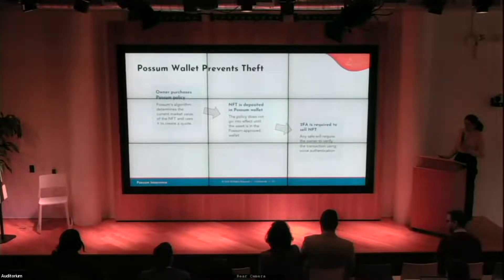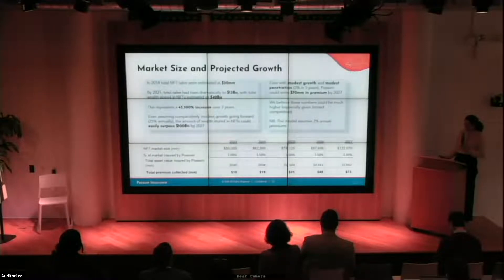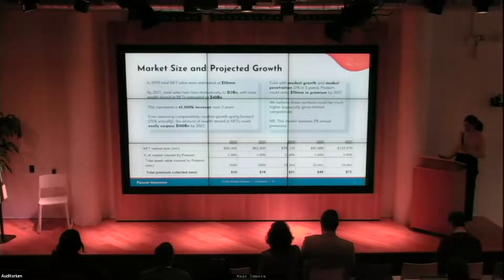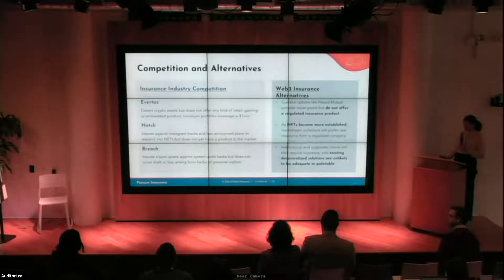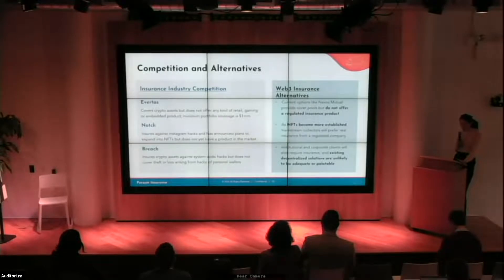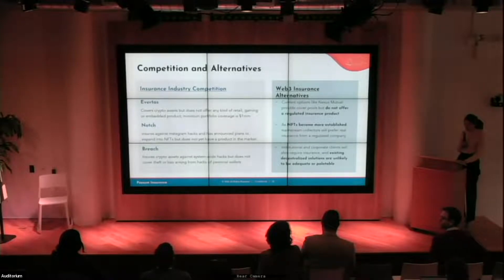The policy does not go into effect until the asset is deposited in a special Possum-approved, multi-signature wallet. We are making conservative assumptions about growth because it's not possible to rely on past trends showing virtually exponential growth. Even with conservative assumptions, we can see our way to $20 million in premiums in 24 months and probably a little over $70 million in five years. This is a totally untapped market. Several adjacent businesses are building products, but none pursue the same segment or growth strategy, and many are unregulated cover pools backed by DeFi protocols that will not be able to scale.